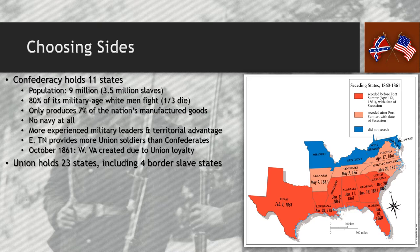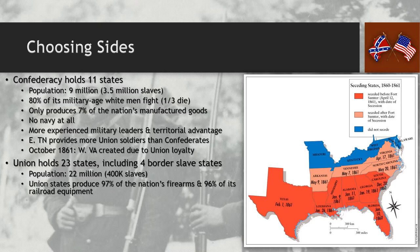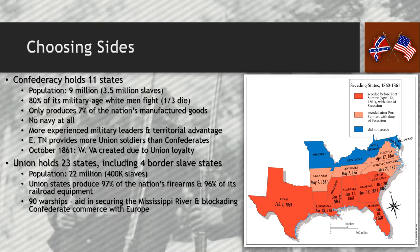The Union holds just over twice what the Confederacy does in terms of states — 23 states, including the four border states that remain part of the Union after overturning slavery. The population of the Union is 22 million people with 400,000 slaves. Union states produce 97% of the nation's firearms and 96% of its railroad equipment, making it extremely well-equipped, well-industrialized, with a distinct manufacturing advantage over the South.